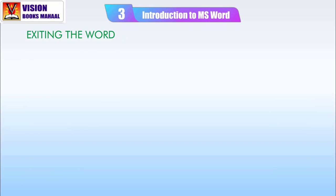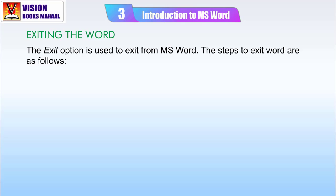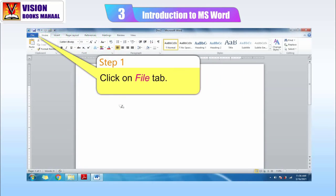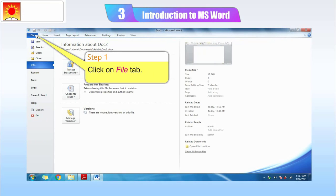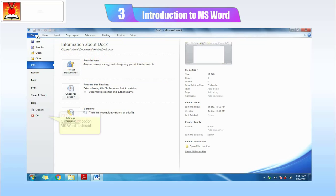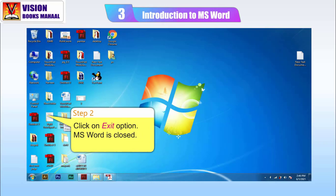Exiting MS Word. The Exit option is used to exit from MS Word. The steps to exit Word are as follows. Step 1: Click on the File tab. Step 2: Click on Exit option. MS Word is closed.